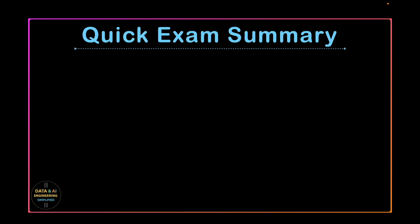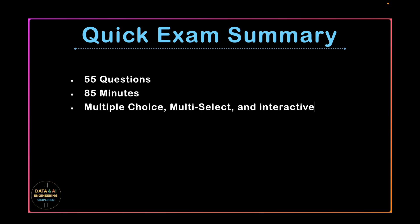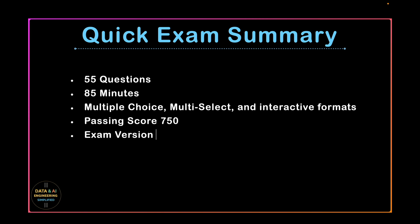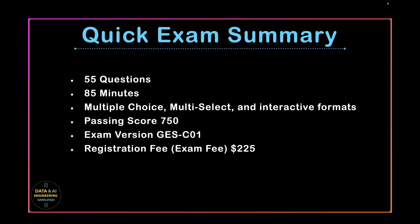Here is the shortest possible exam summary. You have to attempt 55 questions in 85 minutes. This includes multiple choice questions, multi-select questions, and a few interactive format questions. The passing score is set to 750. The exam version is GESC01, and you have to pay $225. If your profile belongs to India, your registration fee is only $180 plus taxes.